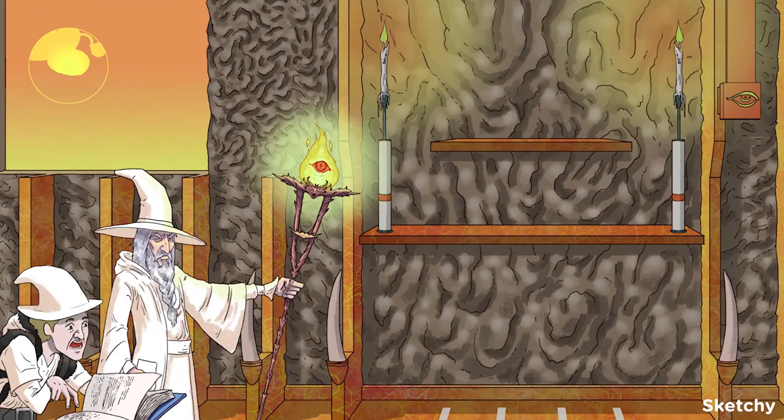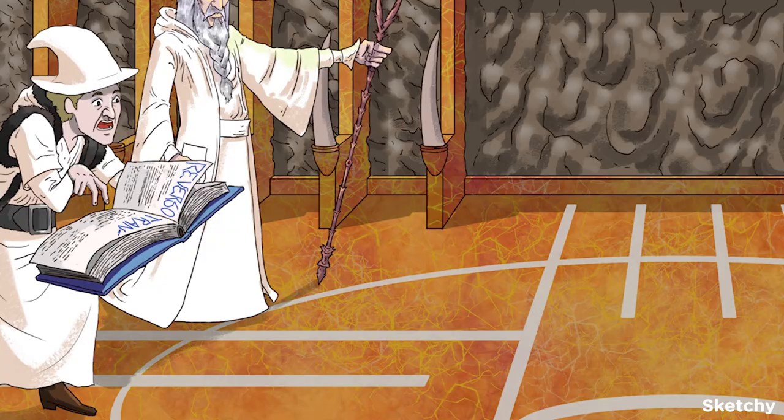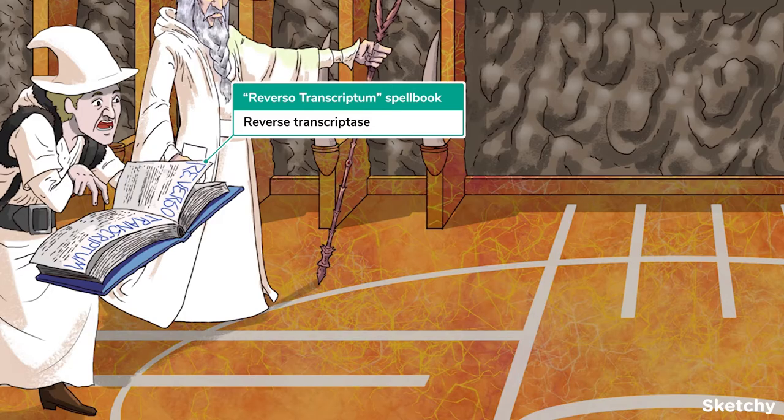HIV is a single-stranded, RNA-positive virus. Notice the warm orange hues representing an RNA virus, plus the positive-sense sun. HIV is a special kind of RNA-positive virus — a retrovirus. This means the virus converts its RNA to DNA by an accompanying enzyme known as reverse transcriptase, or, in wizard lingo, reverso transcriptum.